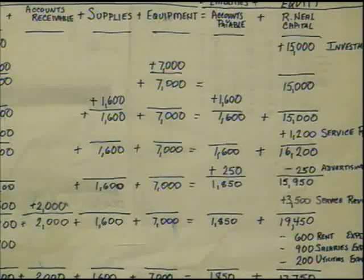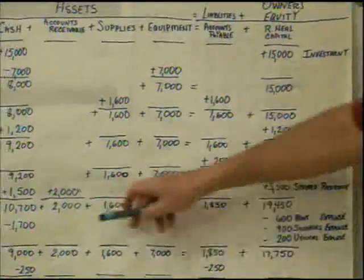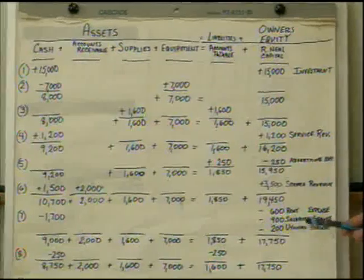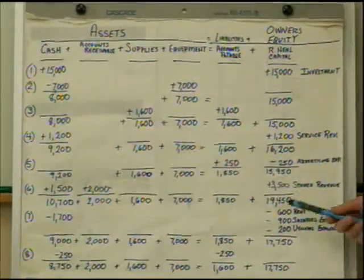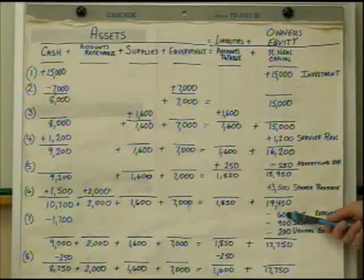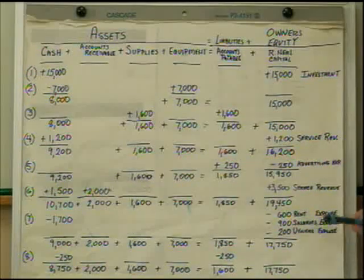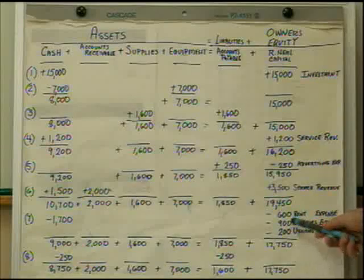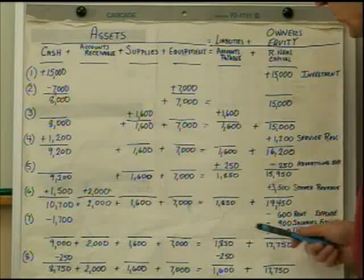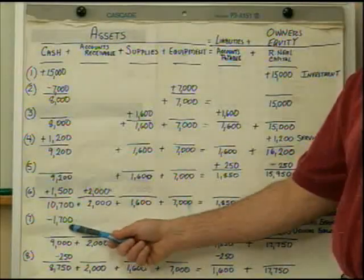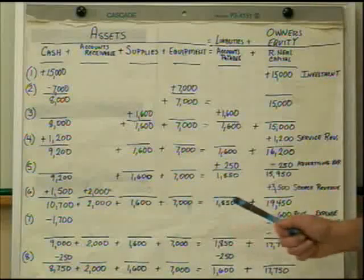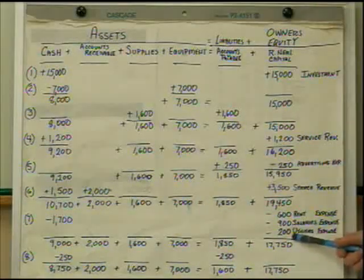Jumping to transaction seven: we paid rent expense of $600, salary expense of $900, and utilities of $200, sending out separate checks. That's a total of $1,700 in cash, so we subtract $1,700 from cash. But we have to show each one separately with a different amount in detail for each expense.